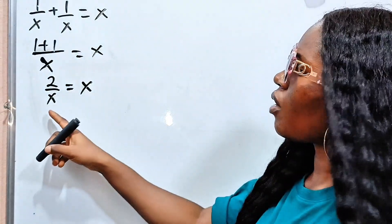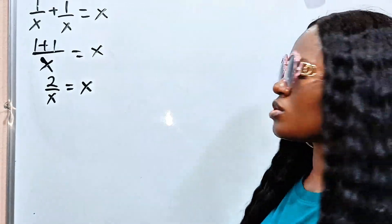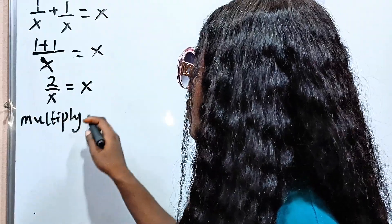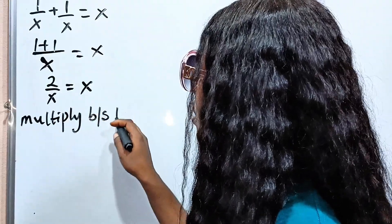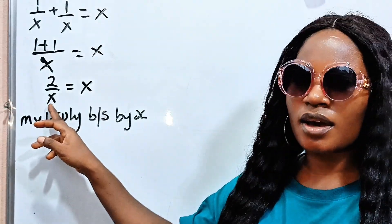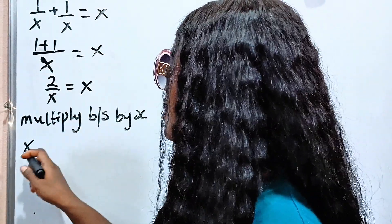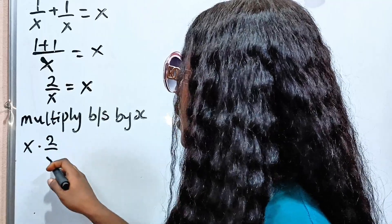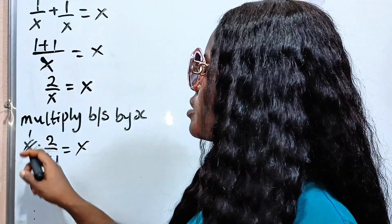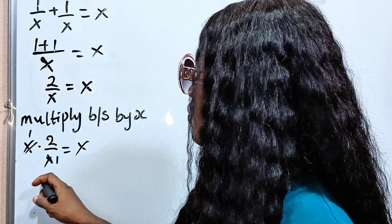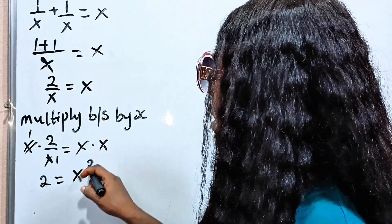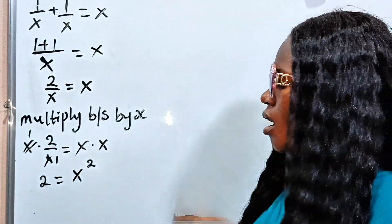Now at this point, what do we do? Let us multiply both sides by x. The essence is to remove this particular x. So we have x multiplied by 2 over x is equal to x times x. The x cancels, so we have 2 is equal to x squared.